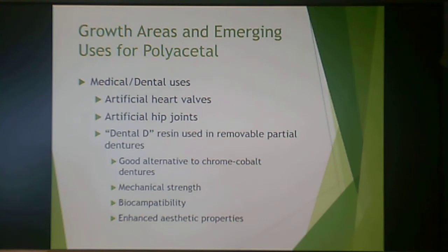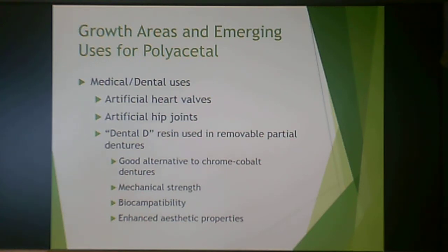Polyacetal is also used in medical and dental applications, including artificial heart valves and artificial hip joints. Dental Delrin D is used in removable dentures or partials as a good alternative to chrome cobalt dentures — it has good mechanical strength, very good biocompatibility, and enhanced aesthetic properties, since it can look more like natural teeth or gums rather than metal.